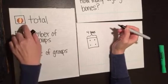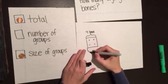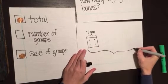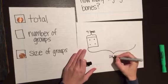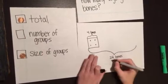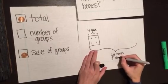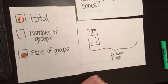I also know that my total is 24 bones. So I'm just kind of going to guess how long that's going to be and write 24 bones. My unknown is the number of groups. I don't know how many dogs there were at the beginning of the question.